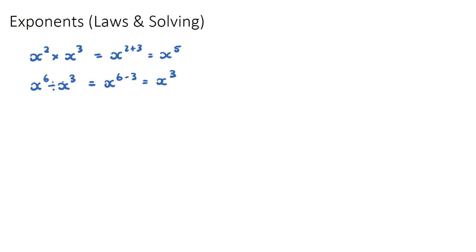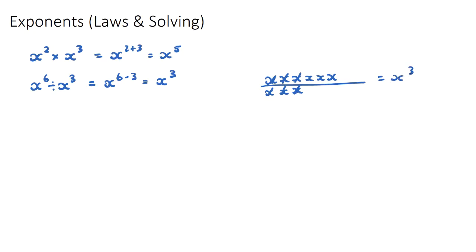To think about this: x to the power of 6 is x times x times x times x times x times x. If I'm dividing by x to the power of 3, which is x times x times x, those three x's cancel out and I'm left with x times x times x, which is just x cubed. So remember: if it's times we add the powers; if it's divided we subtract the powers.